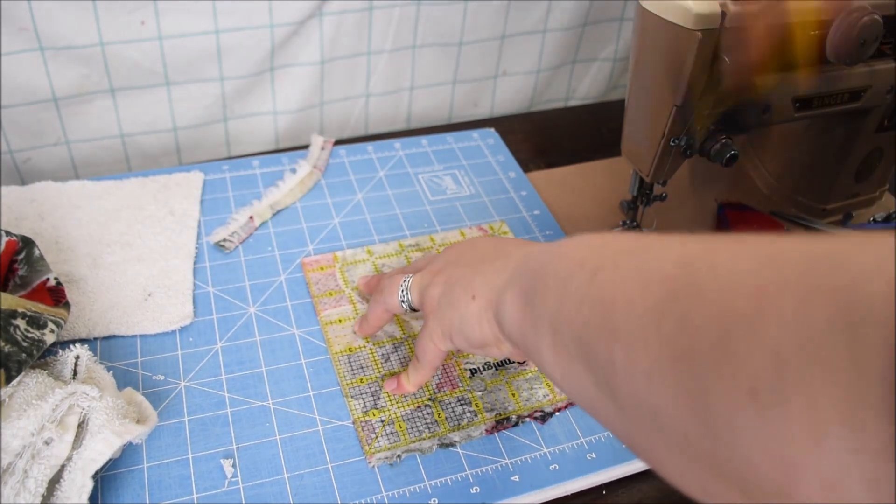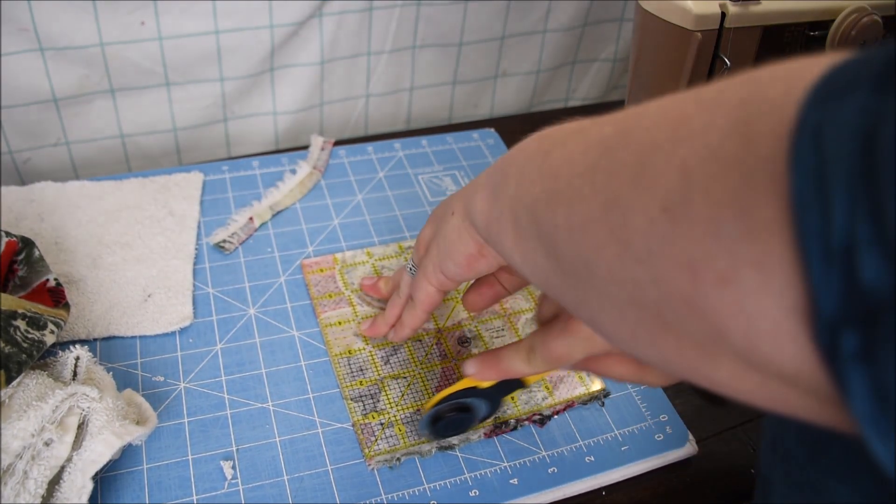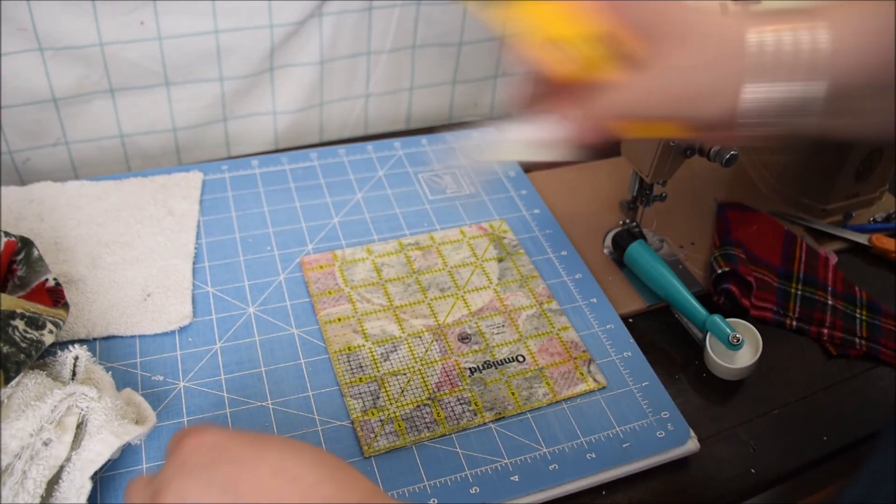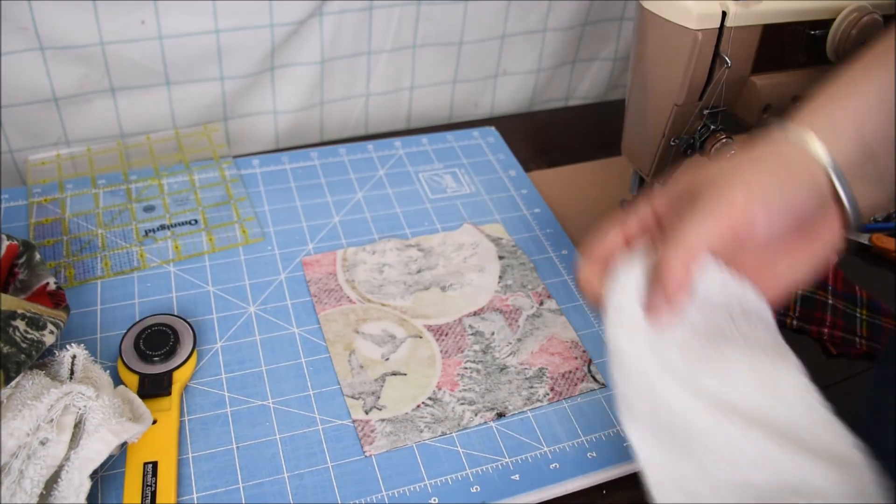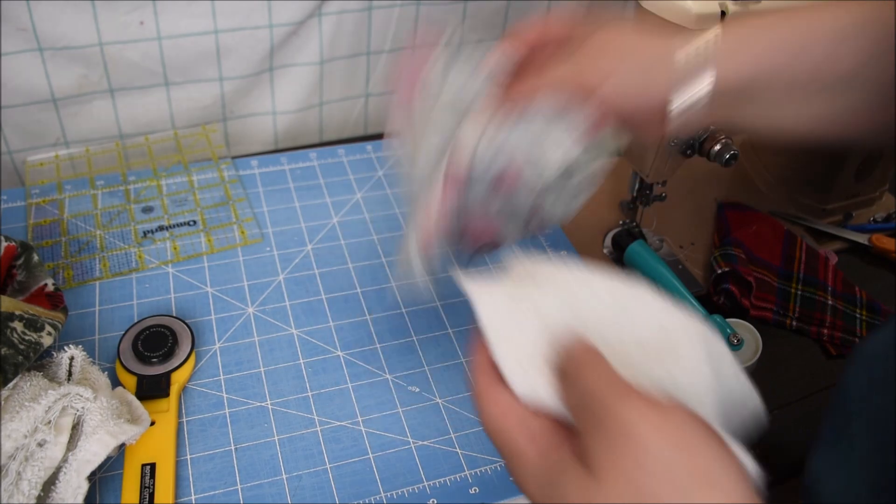You could also make these a little bigger and do a nine and a half inch square. Those work quite well for the kitchen, so we have a big stash of them that we use for various cleaning around the house.